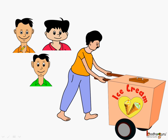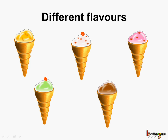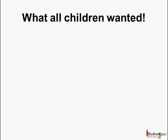This is Aman. He along with his nine friends went out to eat ice cream. The ice cream vendor had many flavors: mango, vanilla, strawberry, pista, and chocolate. All the children wanted their favorite flavors. Let us see what all the children ordered.